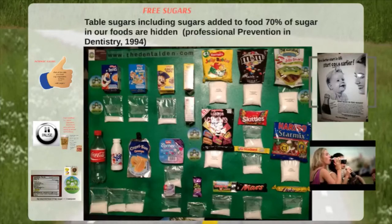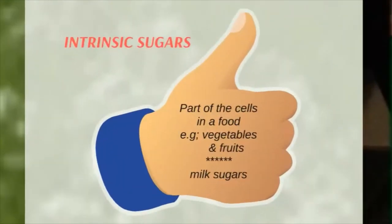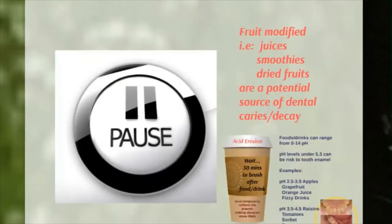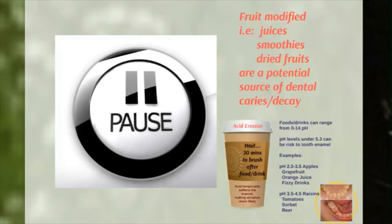Free sugars are added to food and drinks. Intrinsic sugars are found inside the cell of a food or drink, such as in vegetables and fruits, and there are also milk sugars. However, when intrinsic sugars are broken down they become free sugars. If fruits are modified — turned into juices, smoothies, or dried into raisins — they then become a potential source of dental decay.